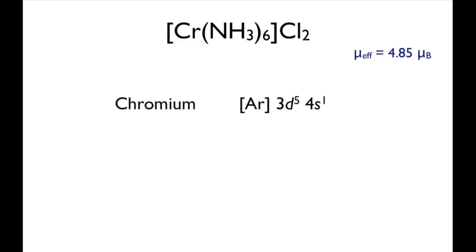A free chromium atom has the electronic configuration argon 3d5 4s1. So an atom of chromium in a complex has an electronic configuration of argon 3d6 since the 4s electron moves into a 3d orbital. Removing two electrons for the charge gives a valence electronic configuration of 3d4 for the chromium centre.